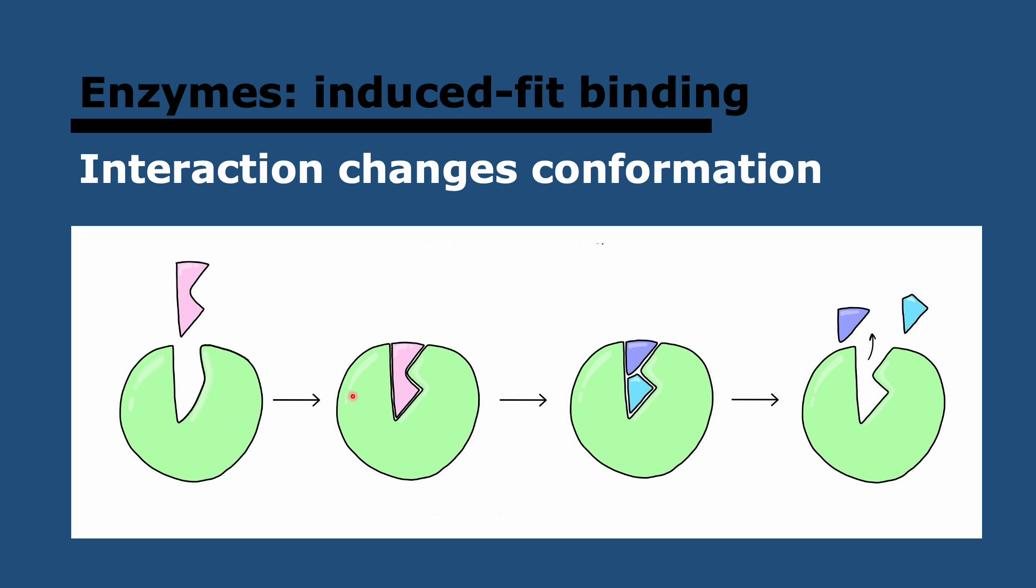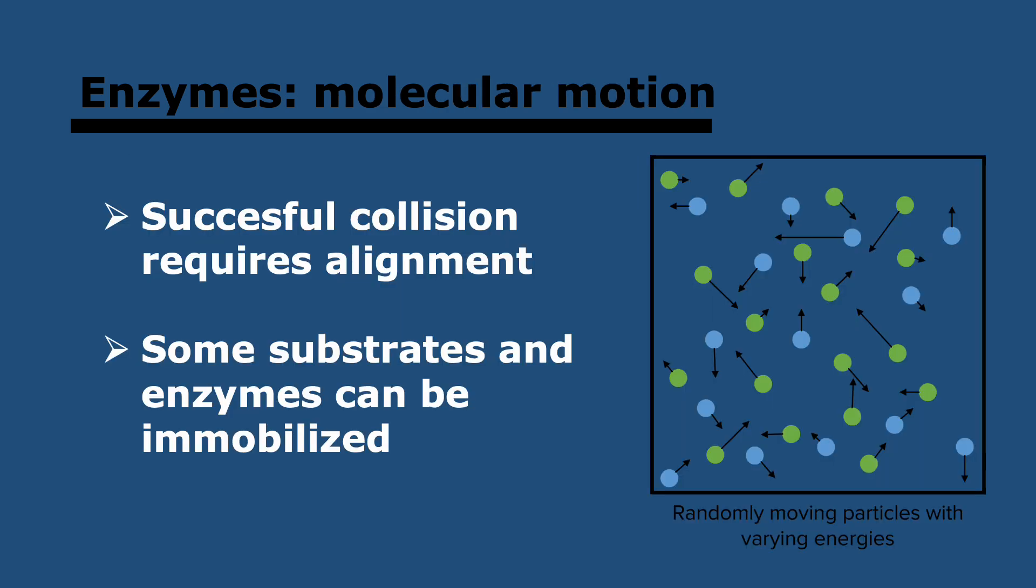And these changes to the substrate make it easier for bonds within them to break and new bonds to form which is really what we need to happen for products to form, from reactants to products. And then once that's done products can detach and the enzyme can return to its original state and then again upon interaction with another substrate they'll change their conformation.